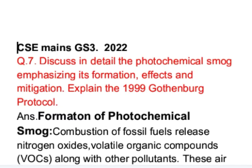In this question, we have to write four things. First is the formation of photochemical smoke. Second is effects of photochemical smoke. Third is mitigation measures to reduce the formation of photochemical smoke. Fourth, we have to briefly explain the Gothenburg Protocol. Now let's see the answer.